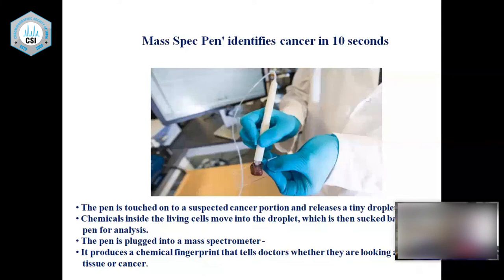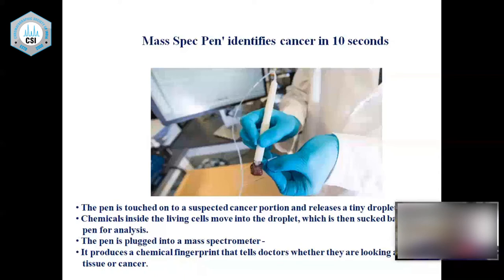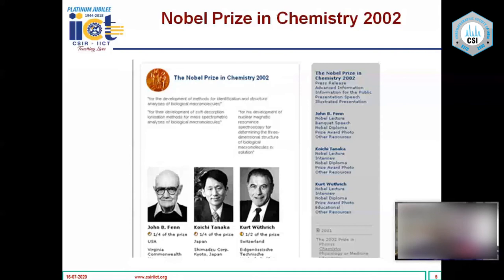One example from biomarker research: scientists at the University of Texas at Austin developed a mass spec pen which can identify cancer in 10 seconds. The pen is touched onto a suspected cancer portion, releasing tiny droplets; chemicals inside the living cells move into the droplet, which is then sent back into the pen for analysis. The pen is plugged into a mass spectrometer, which produces a chemical fingerprint that tells doctors whether tissue is normal or cancerous. In 2002, Professor Fenn and Koichi Tanaka received the Nobel Prize for their contributions to ESI and MALDI respectively, and Wüthrich also shared the Nobel Prize for contributions to NMR.